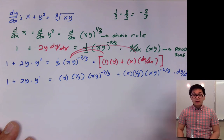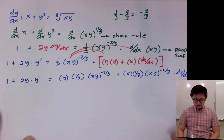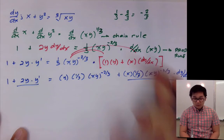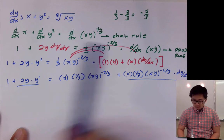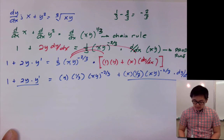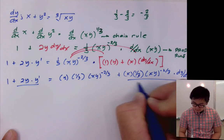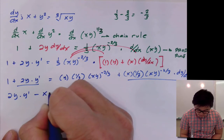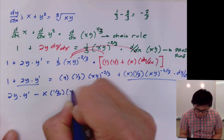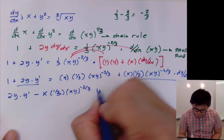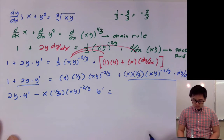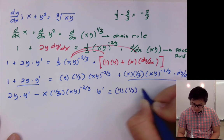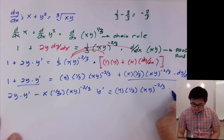Now that I have separated all my terms — four total — I'll group the dy/dx terms on one side. Subtracting x times one-third xy to the negative two-thirds times y prime from both sides gives 2y y prime minus x times one-third xy to the negative two-thirds y prime on the left, and y times one-third xy to the negative two-thirds minus 1 on the right.